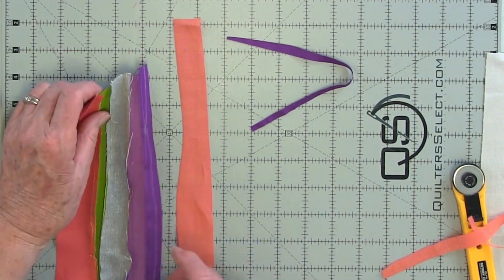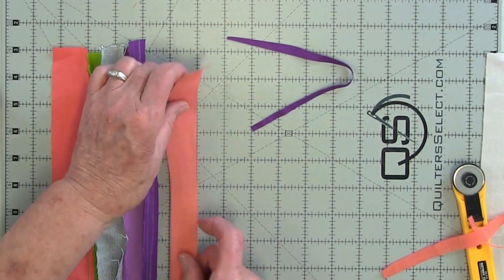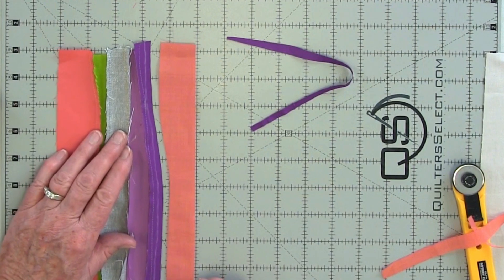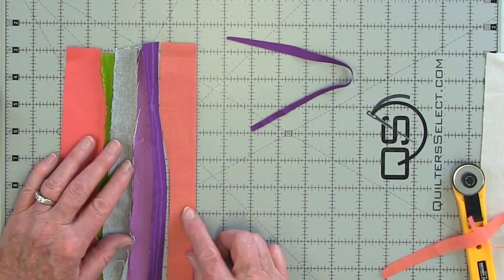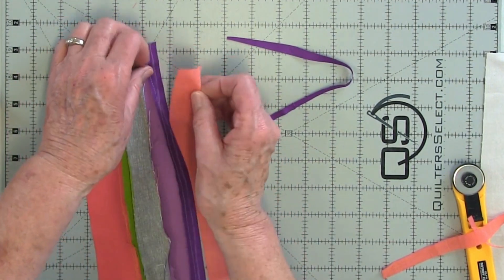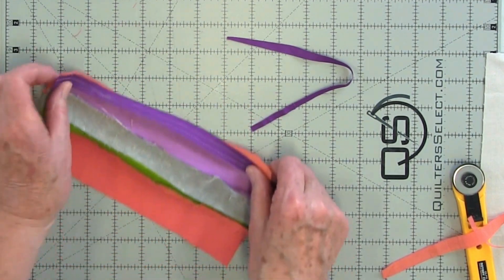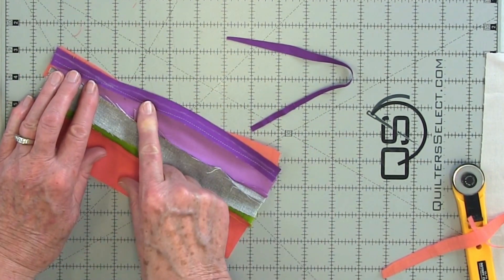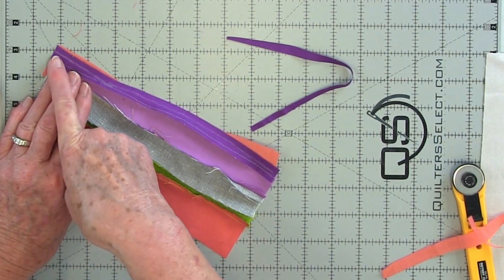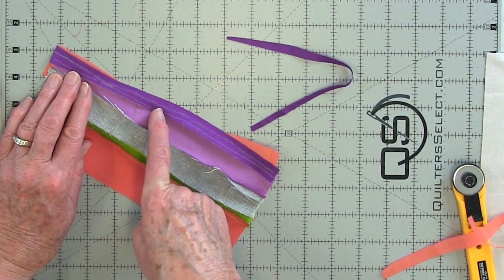So we take and flip this over. And you can see how they match up. We're going to put right sides together and stitch it this time. But we're going to stitch on the wrong side. And I'll stitch right on top of the chalk line.